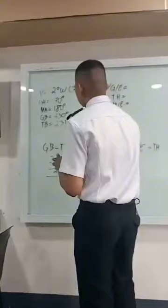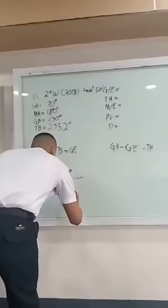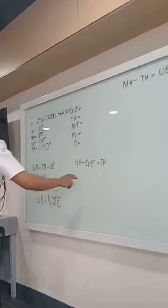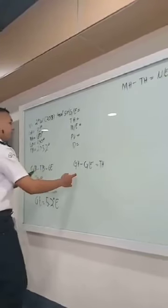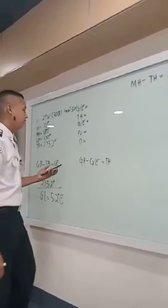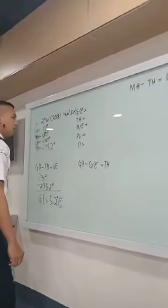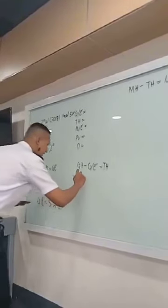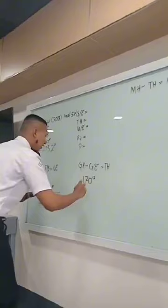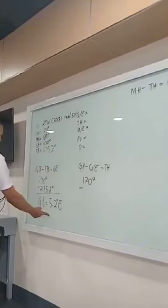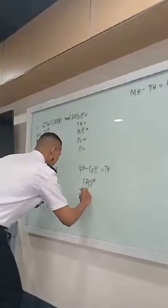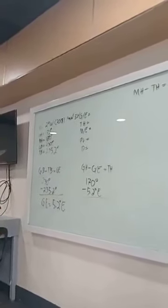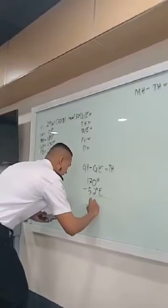And the result is 5.2 degrees east. Next is how to get the true bearing using this formula: gyro heading subtract by gyro error equals true heading. So gyro heading is 170 degrees, 170 degrees subtract by gyro error.